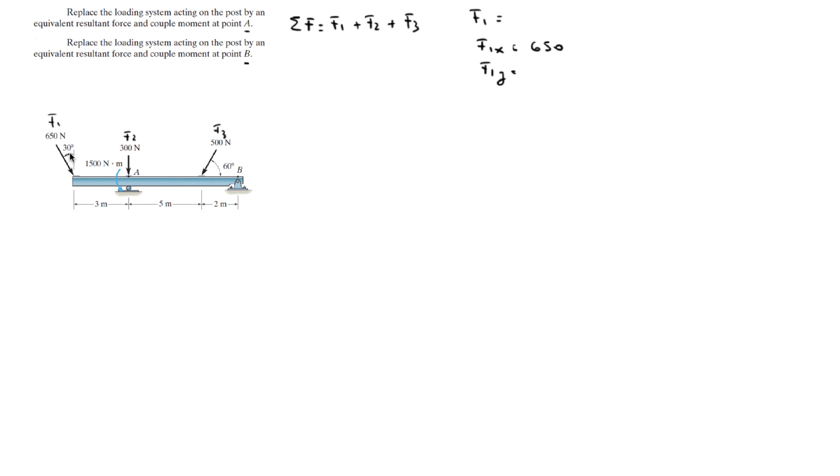The X component is given by the magnitude times the sine of 30 degrees, which is 325, and it's positive because it's going towards the right. In the Y we have the magnitude, 650 times the cosine of 30 degrees, and it's going down so it's negative 562.9.